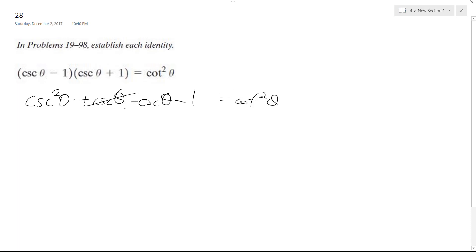All right, so middle terms cancel out. We get cosecant squared theta minus 1. So this is equal to 1 over sine theta, or sine squared theta minus 1.